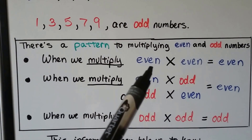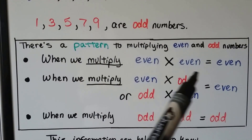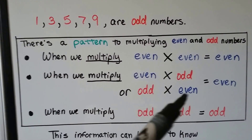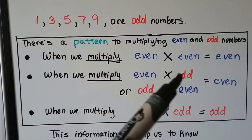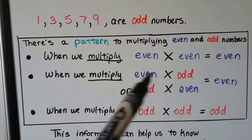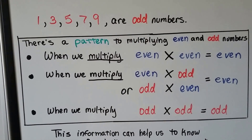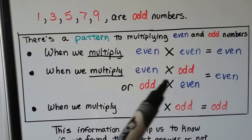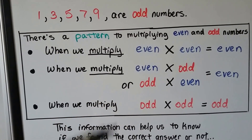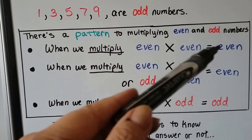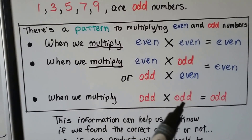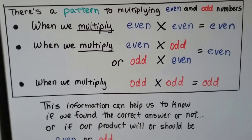When we multiply an even times an even, we're going to get an even. When we multiply an even times an odd — and it doesn't matter what direction we're going in, because the commutative property says it doesn't matter which direction you go when you multiply — it's going to equal the same thing. So when we multiply an even by an odd number, it's going to be even. Both times it came out even: even times even, and even times odd. But when we multiply an odd number times an odd number, we're going to get an odd number.